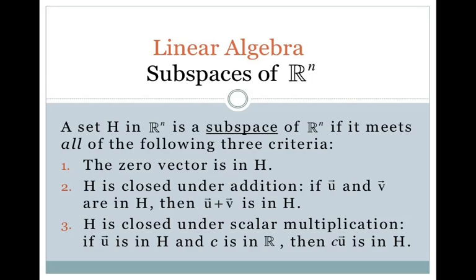The definition is as follows. A set H in Rn is a subspace of Rn if it meets all three of the following criteria: H must contain the zero vector; H must be closed under addition, meaning that if two vectors u and v are both in H, then u plus v must be in H; and H must be closed under scalar multiplication, meaning that if you have a vector u in H and a scalar C, then Cu must be in H also.